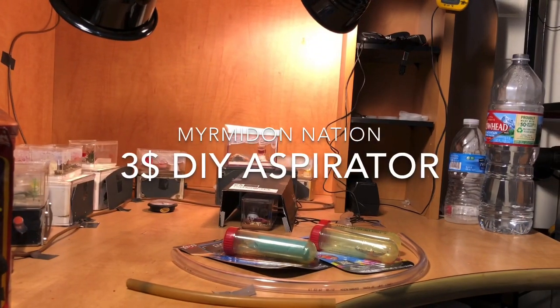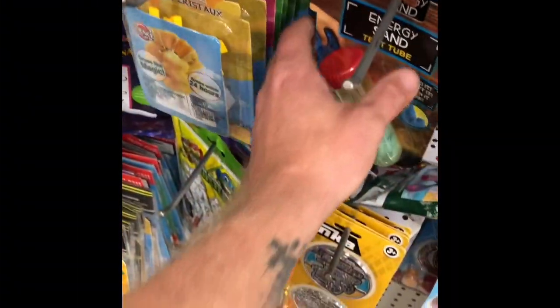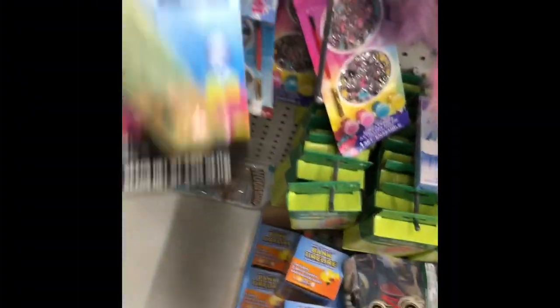Welcome to another episode of Miramadon Nation where I'll show you how to make a $3 DIY aspirator. First I went to Dollar Tree and I found these test tubes in the Arts and Crafts section.